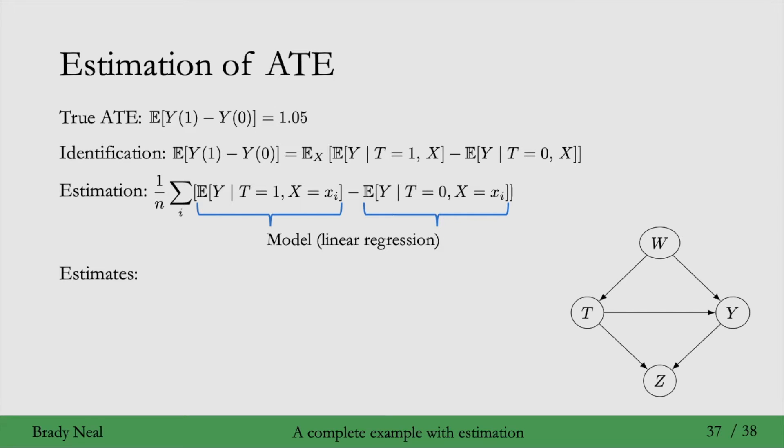We'll now show the different estimates that you get when you use different adjustment sets. So look at the identification line up there, where we're adjusting for X. X is our adjustment set here. When X is the empty set, in other words, when we don't adjust for anything, we get an estimate of 5.33 for the average treatment effect. So this is a huge overestimate of the true average treatment effect, which is 1.05. We're overestimating it by 407%.